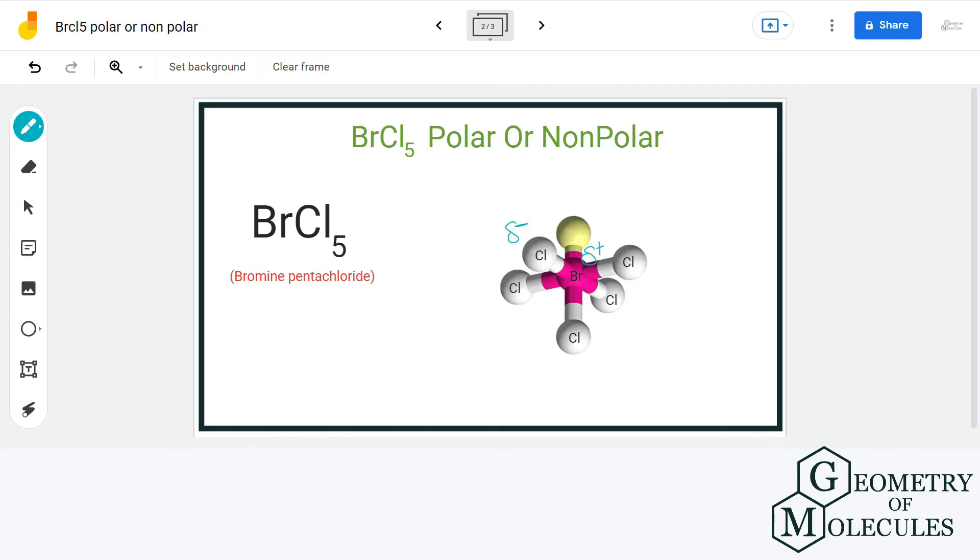And as we saw that the geometry is asymmetrical, the dipole moments don't cancel each other out and we can conclude that BrCl5 is a polar molecule.